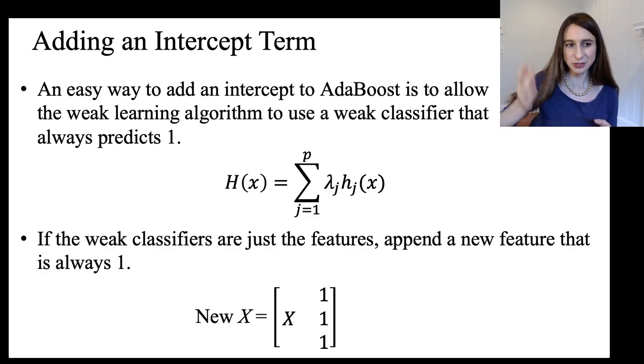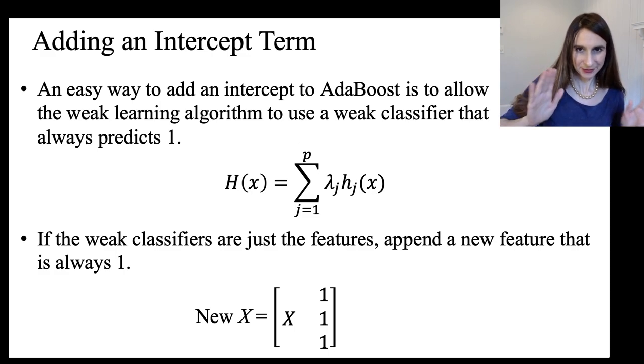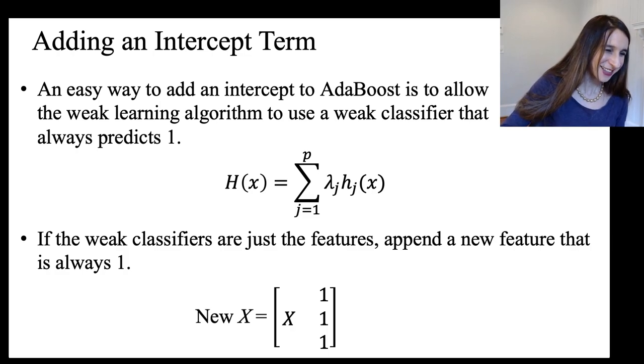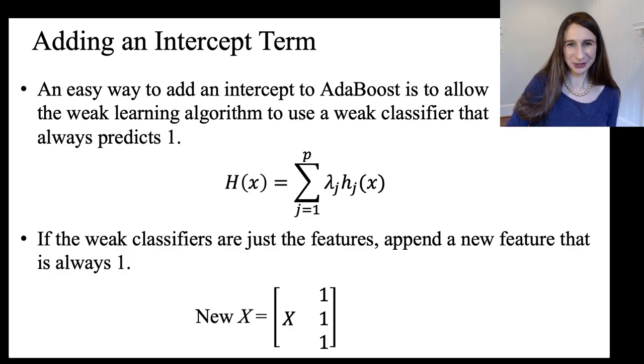and then you just add a feature to it that's always one, so that in the linear combination, the coefficient for that particular feature is the intercept term. So, yeah, nice little trick. And it's useful for lots of other algorithms, too.